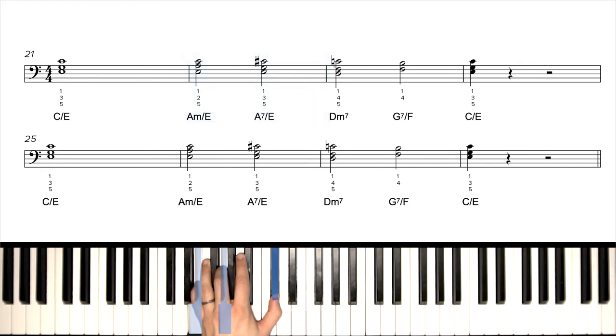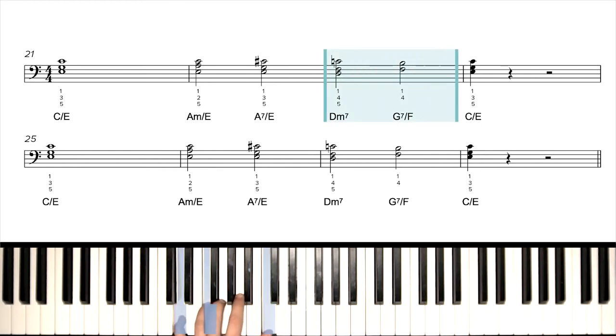Now measure three, still two count note, still a half note. We're going to play D minor seven. We're going to do it with five, four, one. Okay, next chord in this measure, G7 over F, just these two notes, F and B, four and one. And then to finish out this first phrase, we're going to play the same chord we did in the beginning, C over E, just for one quarter note, and then we're going to rest.